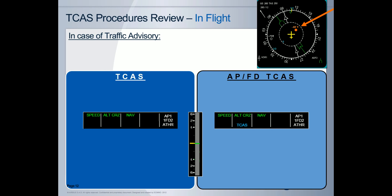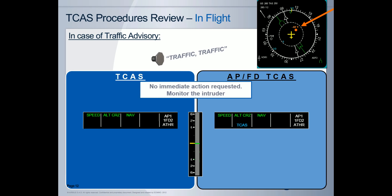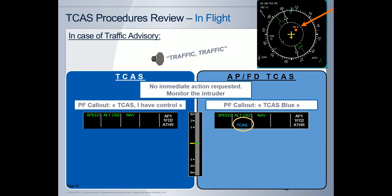Let's assume that the aircraft is in cruise while a traffic advisory triggers. At that time, no immediate action is requested — only to monitor the intruder on the ND with the standard TICAS. The PF calls out 'TICAS, I have control.' For the APFD-TICAS equipped aircraft, the PF will call out 'TICAS blue,' because on the FMA the TICAS blue indication has appeared to indicate to the flight crew that the APFD-TICAS mode is available and that it will engage if the TA changes into an RA. At that time, if the autothrust was disconnected, it is set to ON.